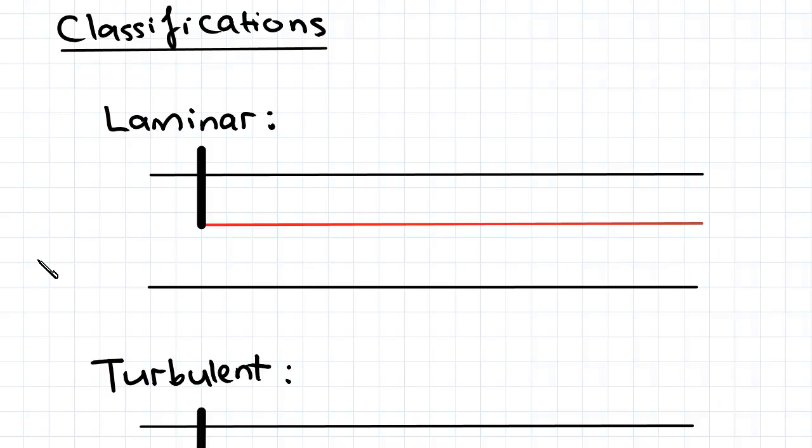So for laminar flow the distinction here is where Re of the flow is less than 2100 and the way we look at this is by injecting dye into a pipe. The way we observe the flow state of a pipe flow is we inject a dye into the pipe with fluid traveling at various speeds. So for laminar flow the flow line is straight and constant meaning it has a constant velocity.